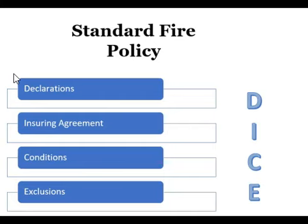On a standard fire policy there are four parts: your declarations, your insuring agreement, your conditions, and your exclusions. That's DICE — you can abbreviate it as DICE to remember that. If you're not familiar with the parts of a policy, check out my free YouTube lecture on the YouTube page and please go over it because it will definitely help you.